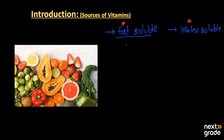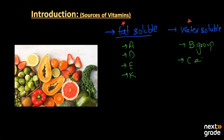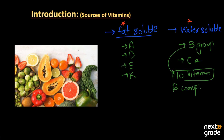The fat-soluble vitamins are four types: Vitamin A, D, E, and Vitamin K. The water-soluble vitamins are of two types: the Vitamin B group and Vitamin C. If you talk about Vitamin B, they are more in number — almost including 10 vitamins — so that is why they are also known as the B complex vitamins.